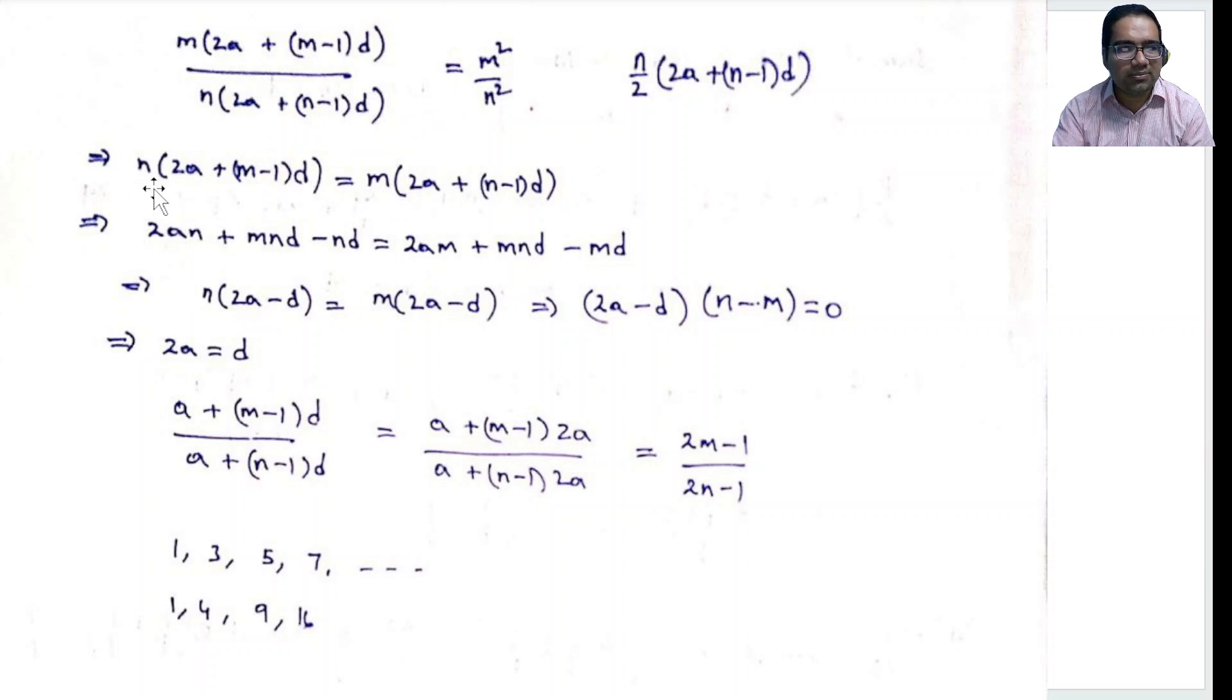Let us just expand. This becomes 2an + mnd - nd. Similarly, 2am + mnd - md. Now, mnd will get cancelled on both sides. Then what will be left with on left side is n(2a - d). Similarly, m(2a - d). Getting both on the same side, we will get (2a - d)(n - m) = 0. This is an important equation here.